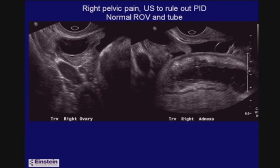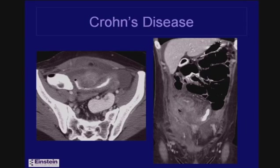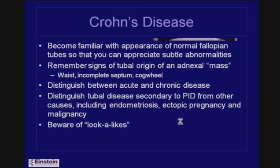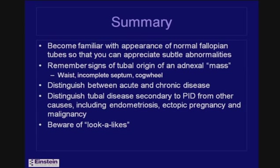Lastly, a patient with right pelvic pain to rule out PID had a normal ovary with a follicle, some normal fallopian tube, fluid, and then a large thick-walled tubular structure with a bowel signature — too big to be the appendix and extending on and on. This was the terminal ileum in a patient with Crohn's disease and a very thick-walled abnormal terminal ileum. In summary, become familiar with the appearance of normal fallopian tubes to appreciate subtle abnormalities. Remember the variety of signs — adnexal mass separate from the ovary, waist sign, incomplete septum sign, and cogwheel sign — distinguish between acute and chronic disease, appreciate tubal disease not due to PID, and be aware of look-alikes.